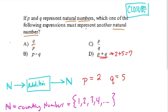They're asking which must represent another natural number. So this is a possibility. D, it seems, always produces natural numbers.